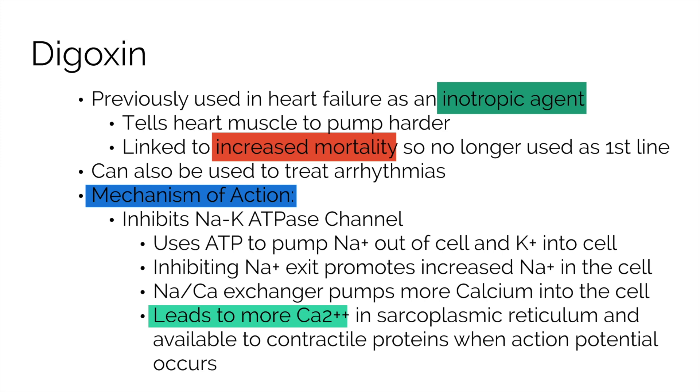In addition, there is a sodium-calcium exchanger that allows sodium to flow down its gradient and in exchange pumps calcium into the cell. As a result of the increased sodium in the cell, this causes a greater flow of calcium into the cell. With the greater flow of calcium into the cell, there is more available in the sarcoplasmic reticulum and more available for contractile proteins when the membrane depolarizes, resulting in a more vigorous contraction.